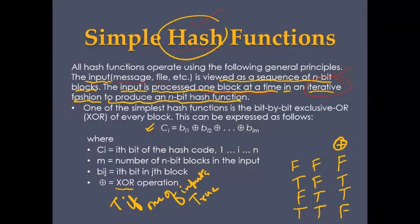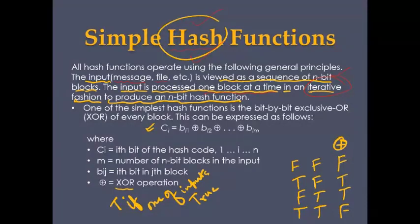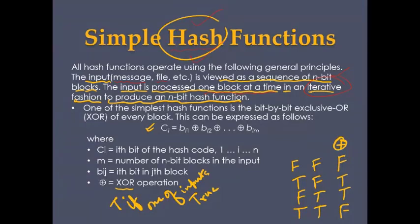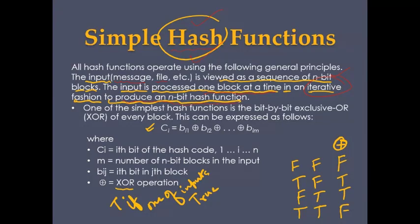Each time, one block is taken and the hash function is applied, converting it into cipher text. Then the next block is taken and converted using the hash function, and so on, one by one. This produces an n-bit hash value. That is all about this simple hash function.